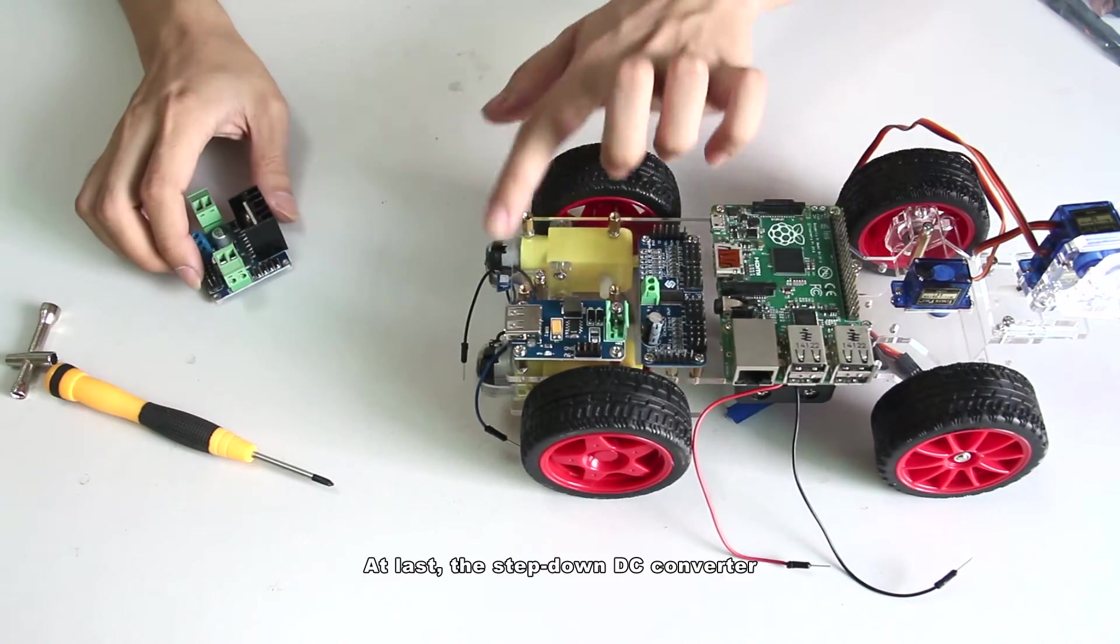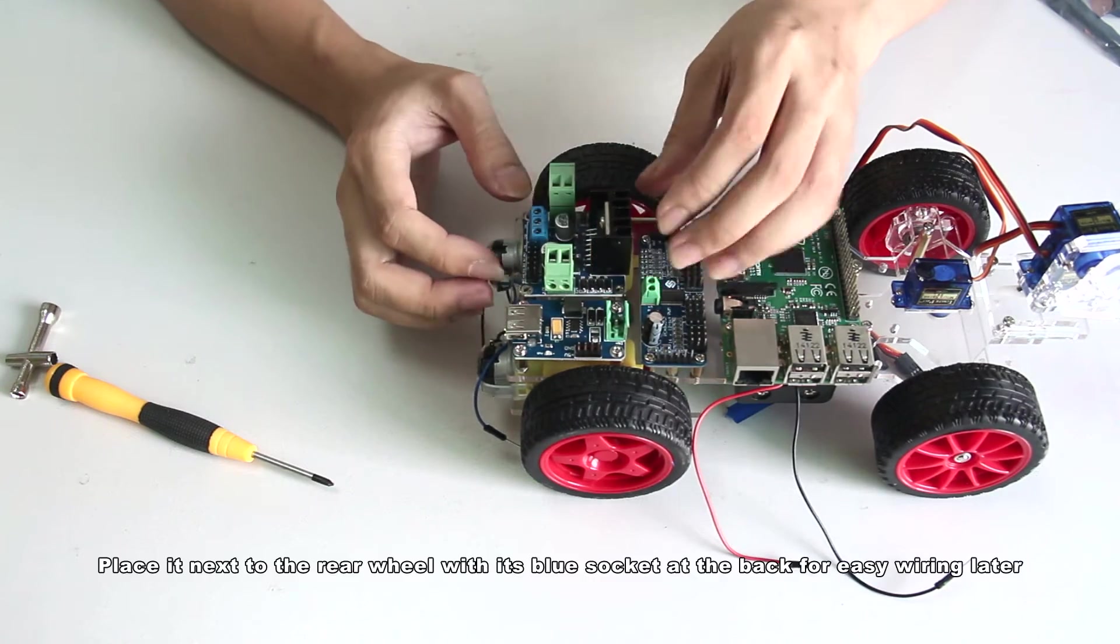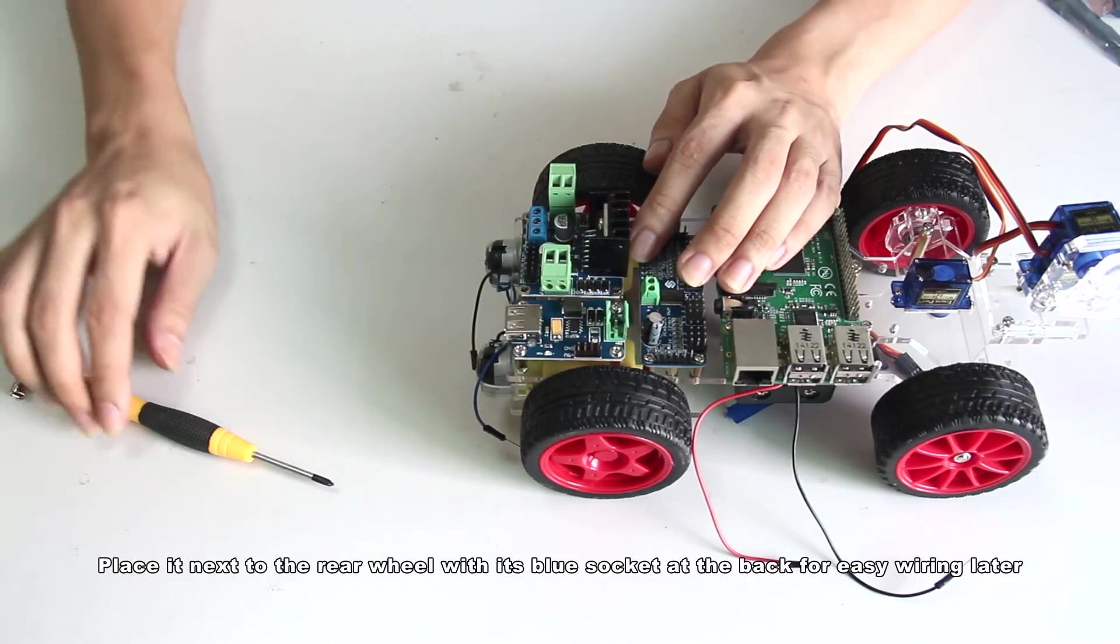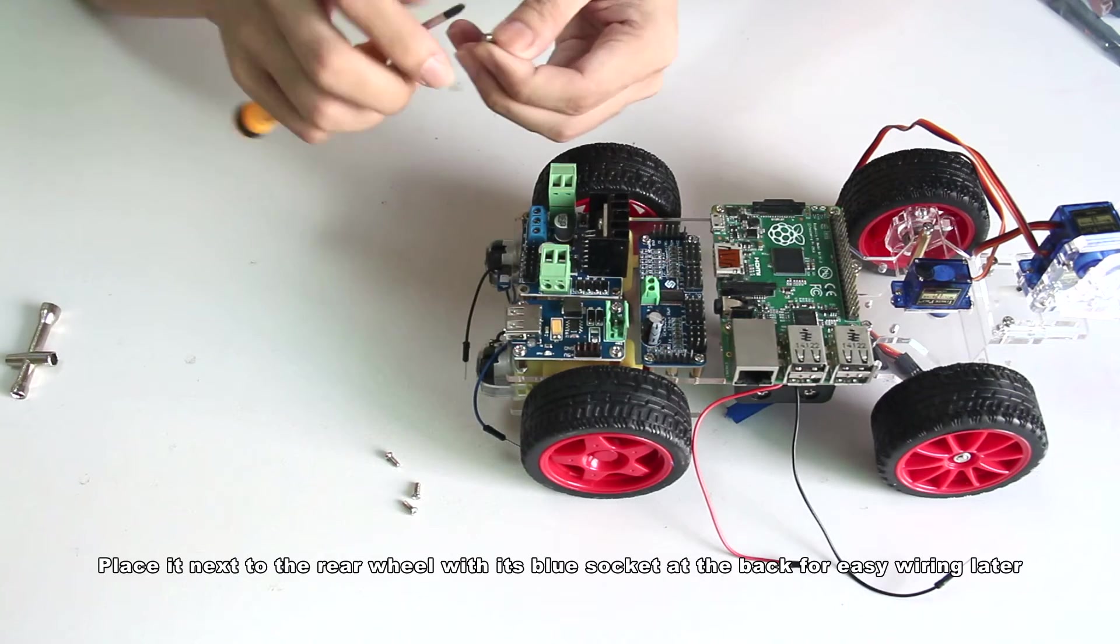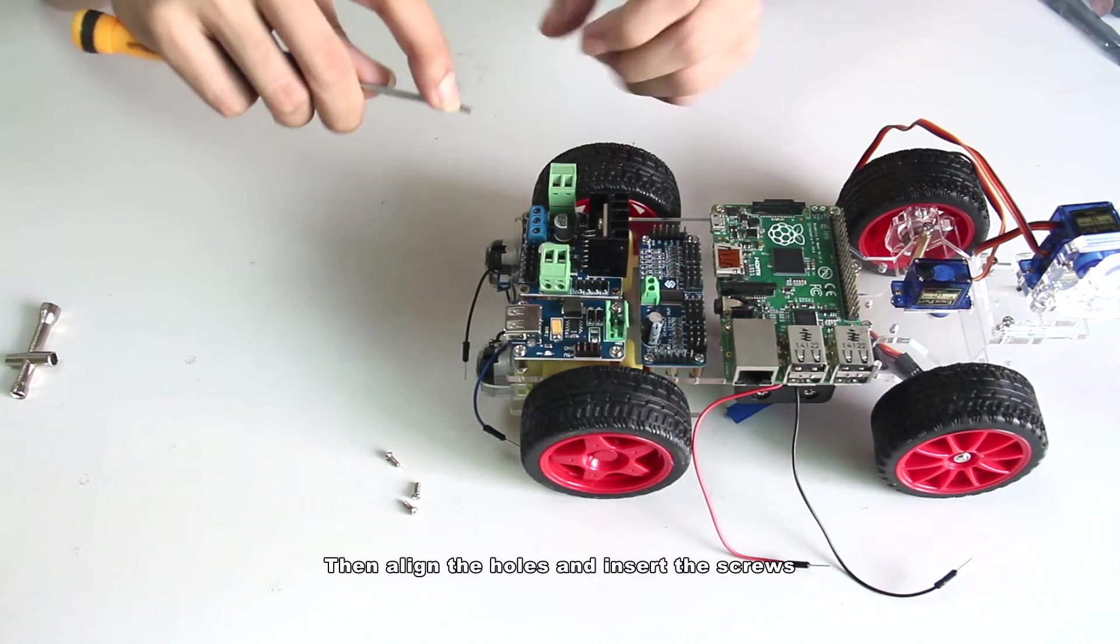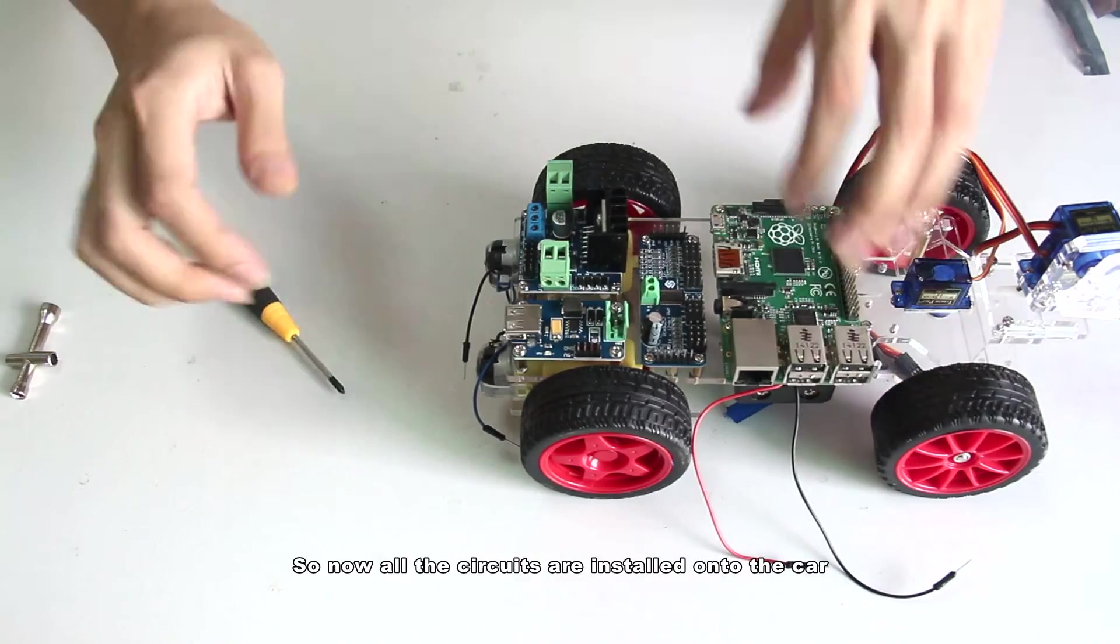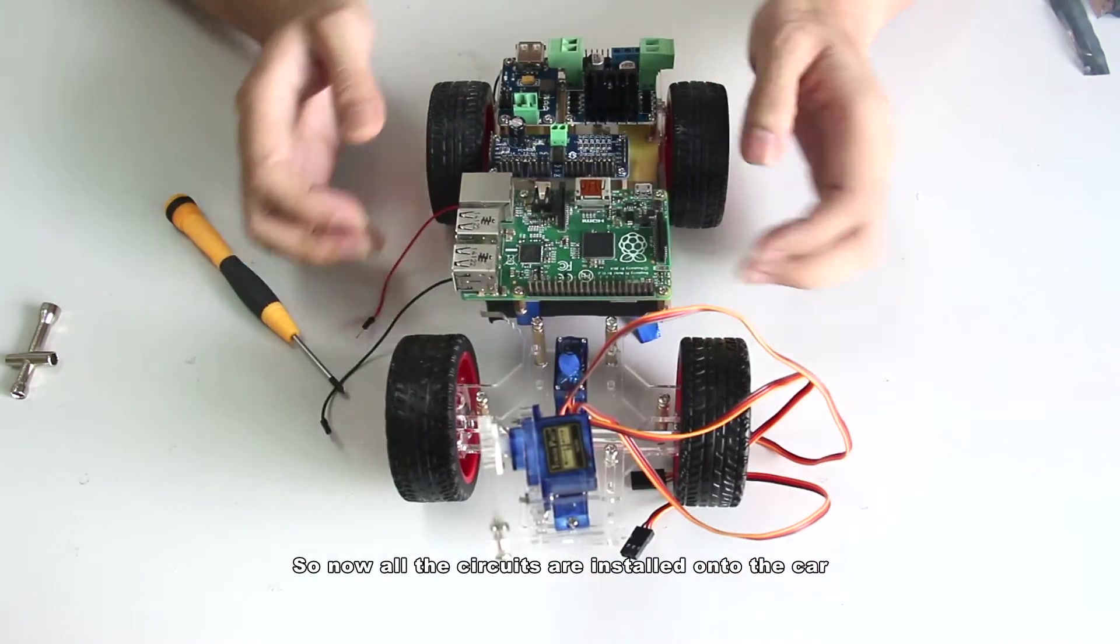At last, the step-down DC converter. Place it next to the rear wheel with its blue socket at the back for easy wiring later. Then align the holes and insert the screws. So now all the circuits are installed onto the car.